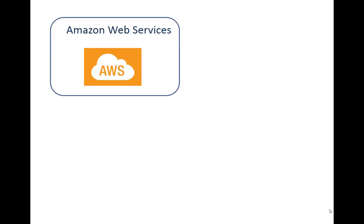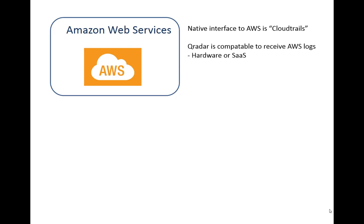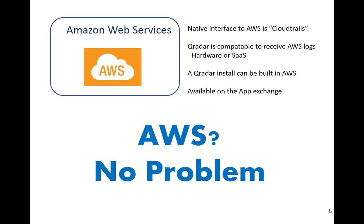First order of business is always Amazon Web Services. Their native interface is called CloudTrail — they collect their own logging so you can send it off to wherever you'd like. QRadar is compatible with AWS whether using the hardware or the SaaS version. We can build QRadar right inside Amazon Web Services if that's the route you want to go, and it's also available in the app exchange. AWS — no problem at all.